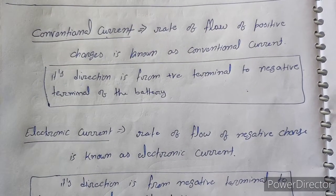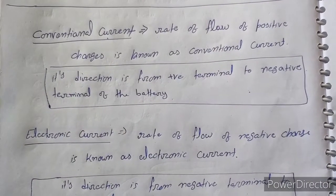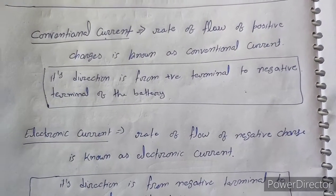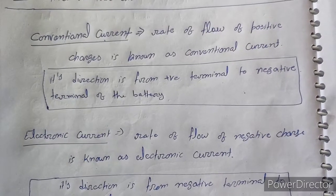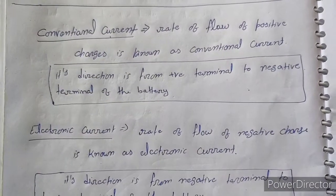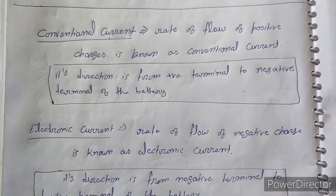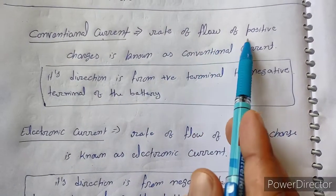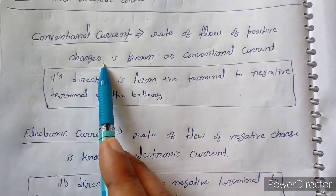As we know, electric current is defined as the rate of flow of charge — simply q over t is known as current. But what is conventional current? Before the discovery of electron, it was believed that current is constituted by positive charges. So conventional current is the rate of flow of positive charges. We are using here the term positive charges.